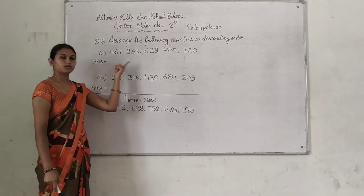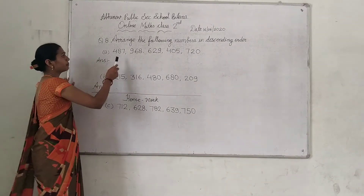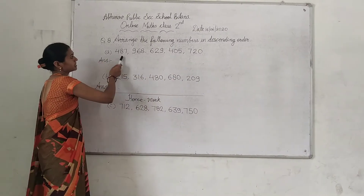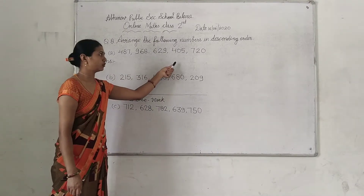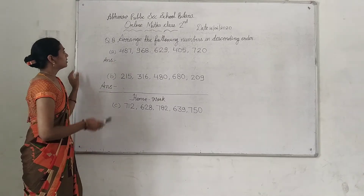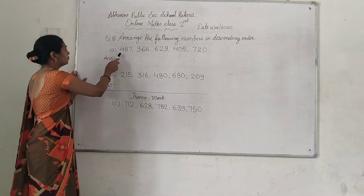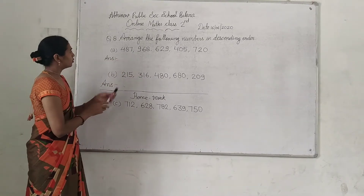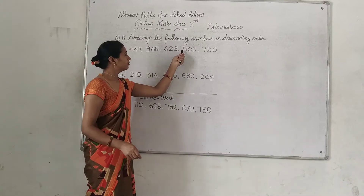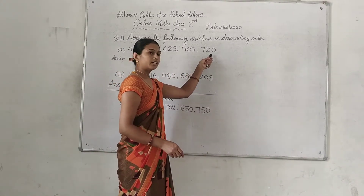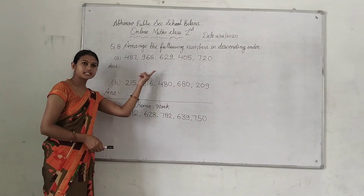First of all, we will write the biggest number here. For part A, which number is the biggest? The numbers are 487, 968, 629, 405, and 720. We will write the biggest number first.